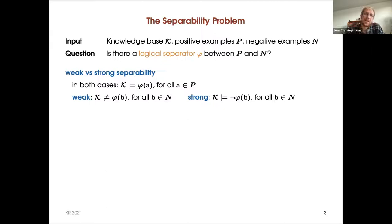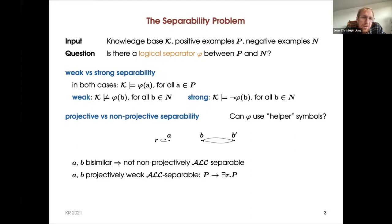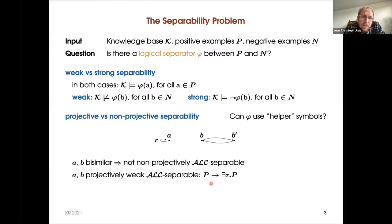These two notions have been around in the literature and have been studied. There is another dimension: projective and non-projective separability. The question here is whether the separating formula can use helper symbols — that means symbols not present in the knowledge base. To illustrate that this can make a difference: if a is a positive example and b is a negative example, they cannot be separated by an ALC concept because a and b are bisimilar. But if we allow an extra symbol p, then they are separable by this concept — so a and b are projectively weakly separable.